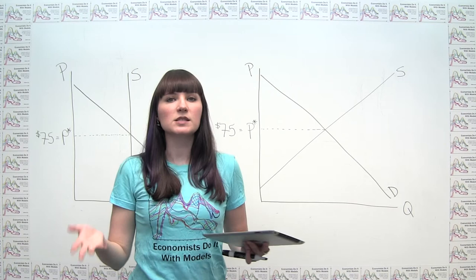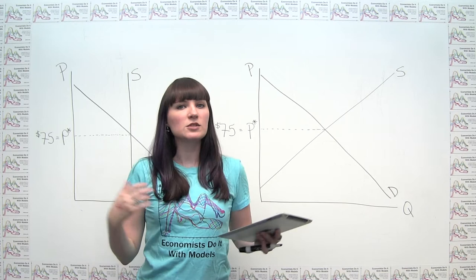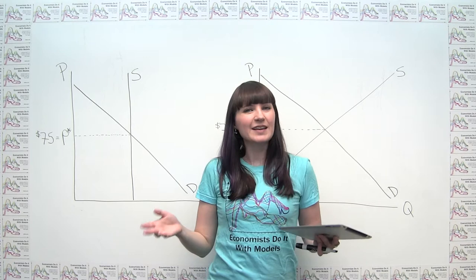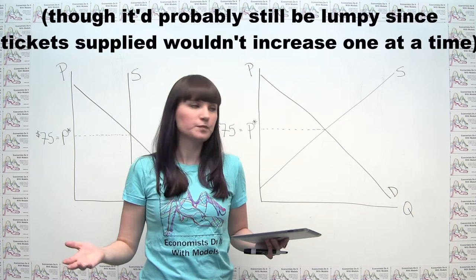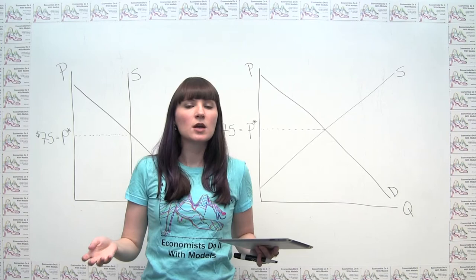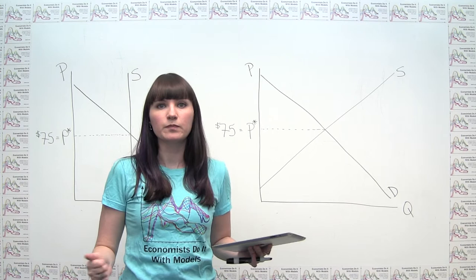So one option to model this particular scenario would be something like this. On the other hand, we could say, technically speaking, if an artist could get a higher ticket price, that would serve as an incentive to actually play more shows and so on and so forth. And if that's true, then we might actually see a supply curve that's upward sloping like this here.